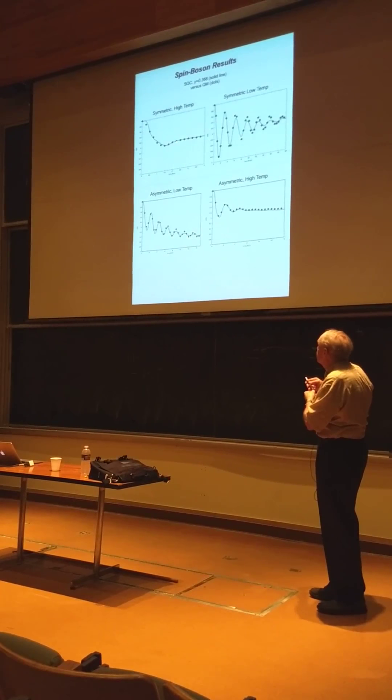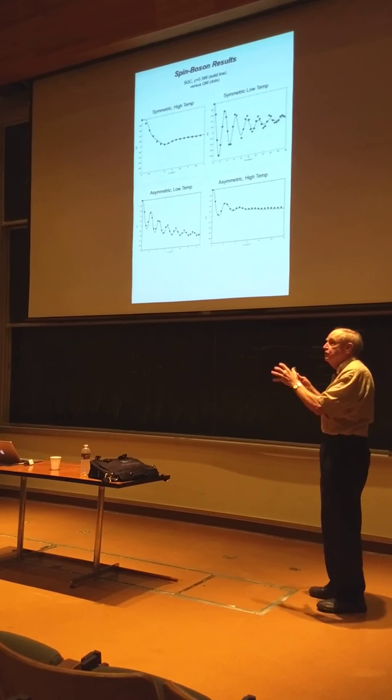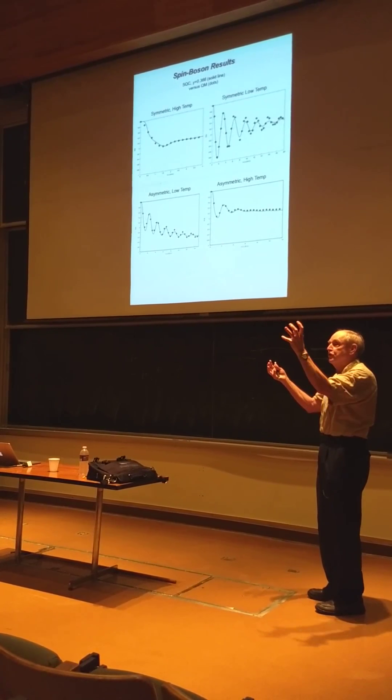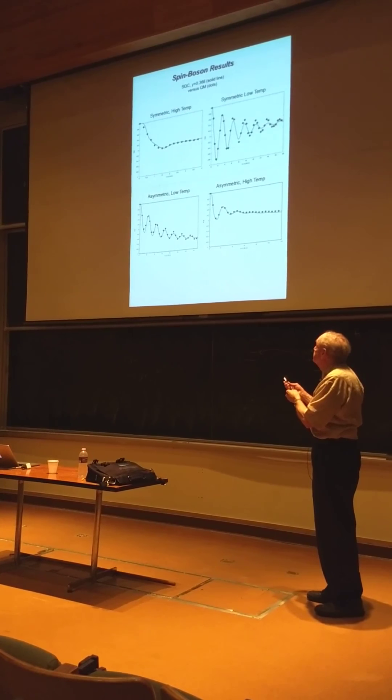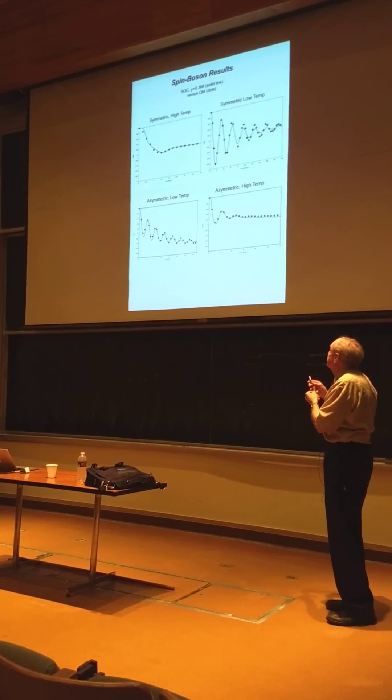So again, the two electronic states, or these two oscillators, states 1-0 and 0-1, they're coupled, and so the expectation hops back and forth between them. If the coupling is large, it hops back and forth rapidly.